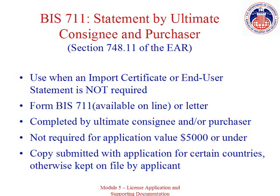If your export does not meet one of the exemptions for support documentation and does not require an import certificate or end use statement, then the statement by ultimate consignee and purchaser is required unless the application is valued at $5,000 or less. If the ultimate consignee and purchaser are different, two separate statements must be obtained. The statement can either be submitted using form BIS-711, available for download on the BIS website, or it may be included as a statement on company letterhead in lieu of form BIS-711, provided that the ultimate consignee and purchaser include all of the required information.